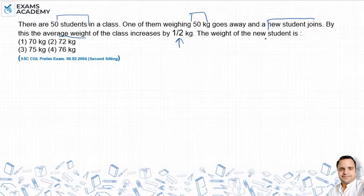So the difference in average weight is 0.5 kg times 50. If we do this, what is the difference? 25 kg. This is the difference that gets added.